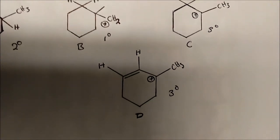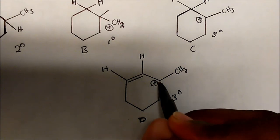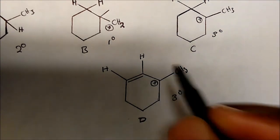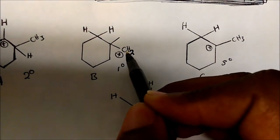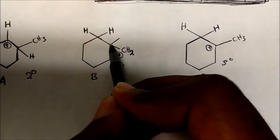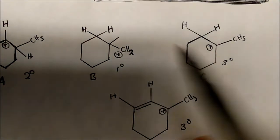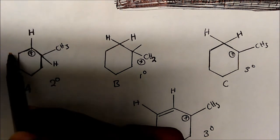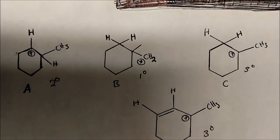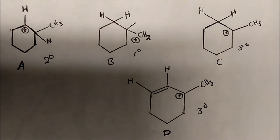One could look at this and say, okay, this carbon is bonded to one, two, three carbons, therefore it's tertiary. They could look at this one and say this carbon is bonded to one carbon, so it's primary. And this carbon is bonded to one, two carbons, so it's secondary. Certainly that's a good way of thinking about it. However, I like to train myself to think in terms of hydrogen, because it will train your brain to become better at substitution and elimination reactions.